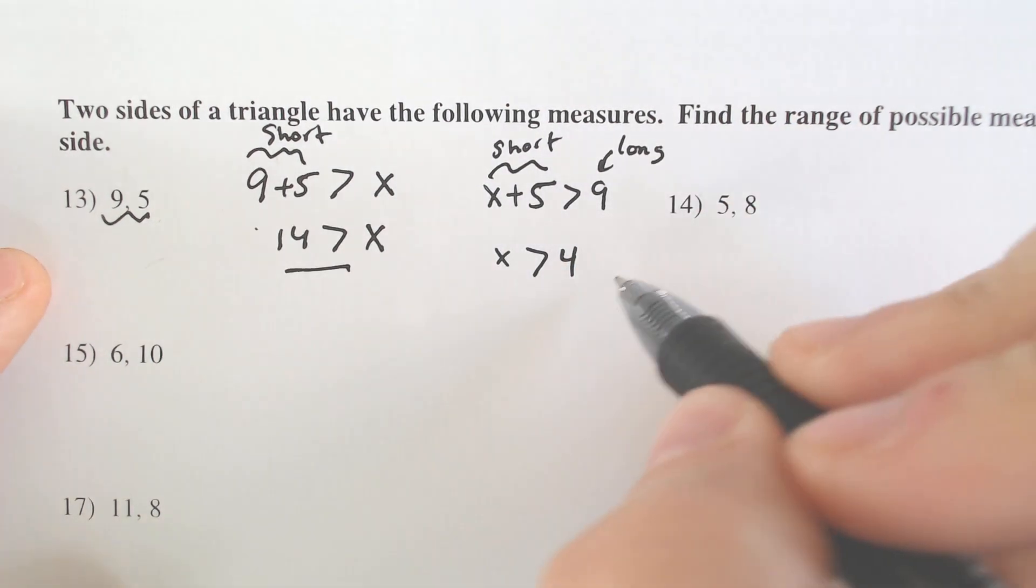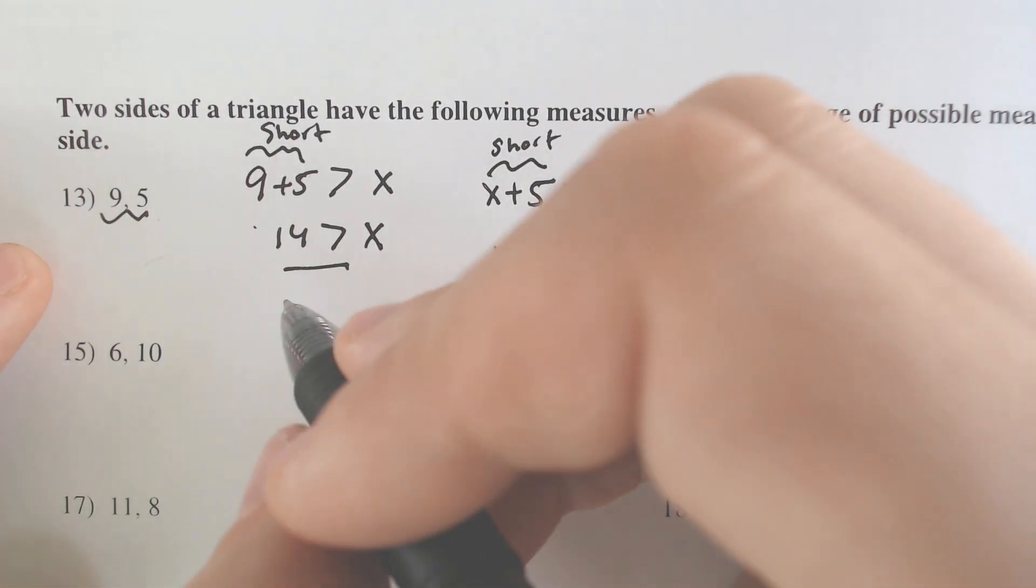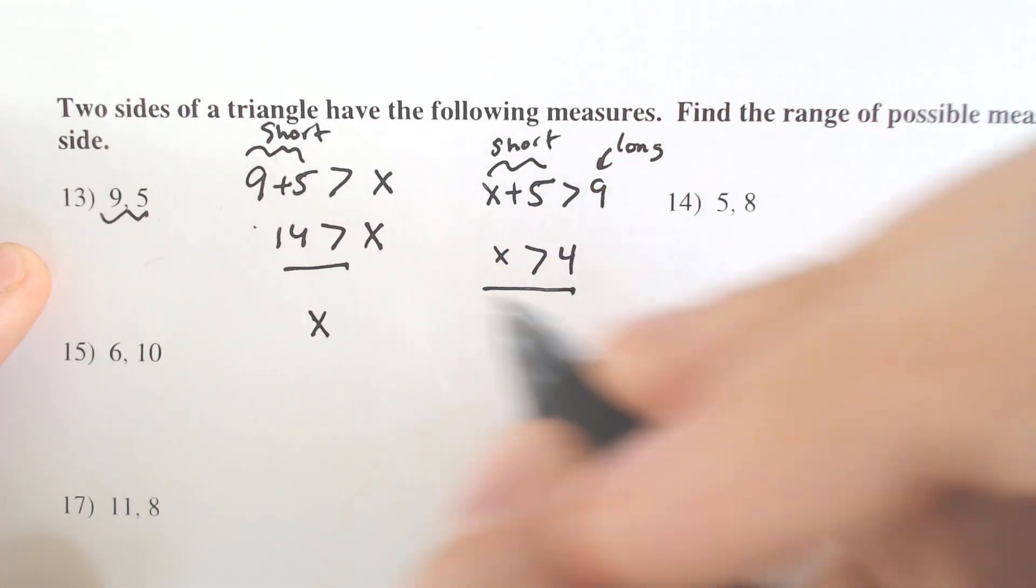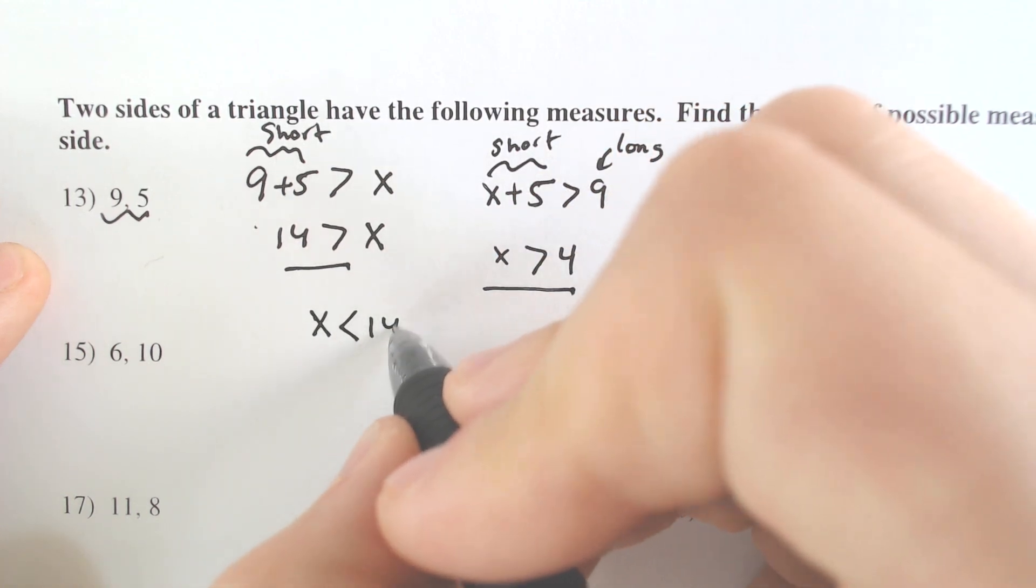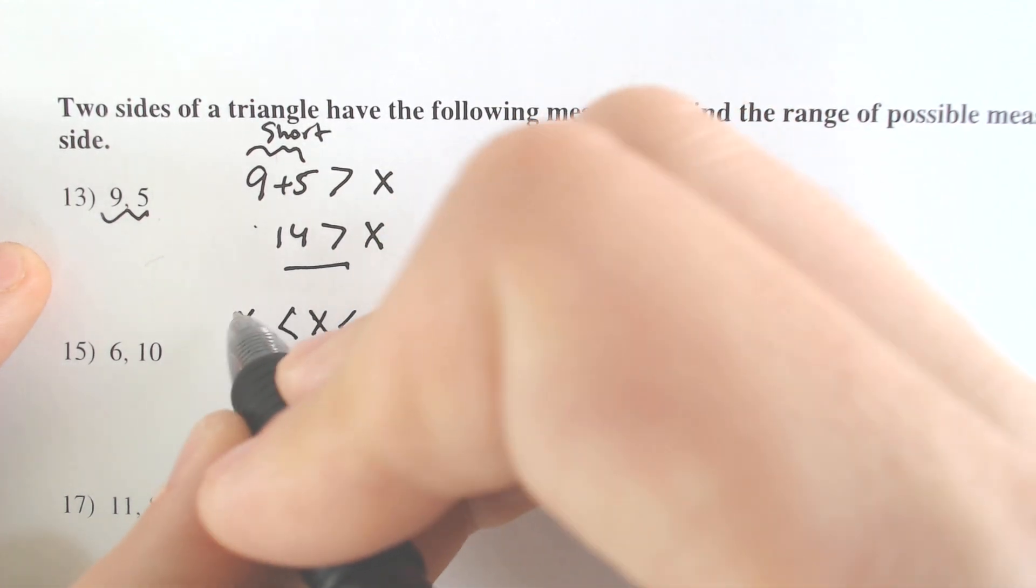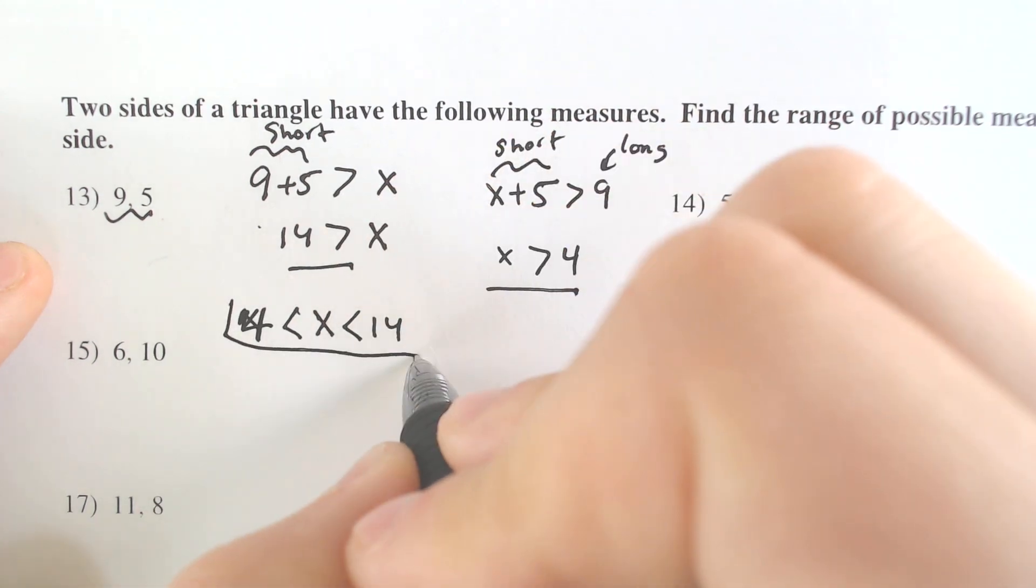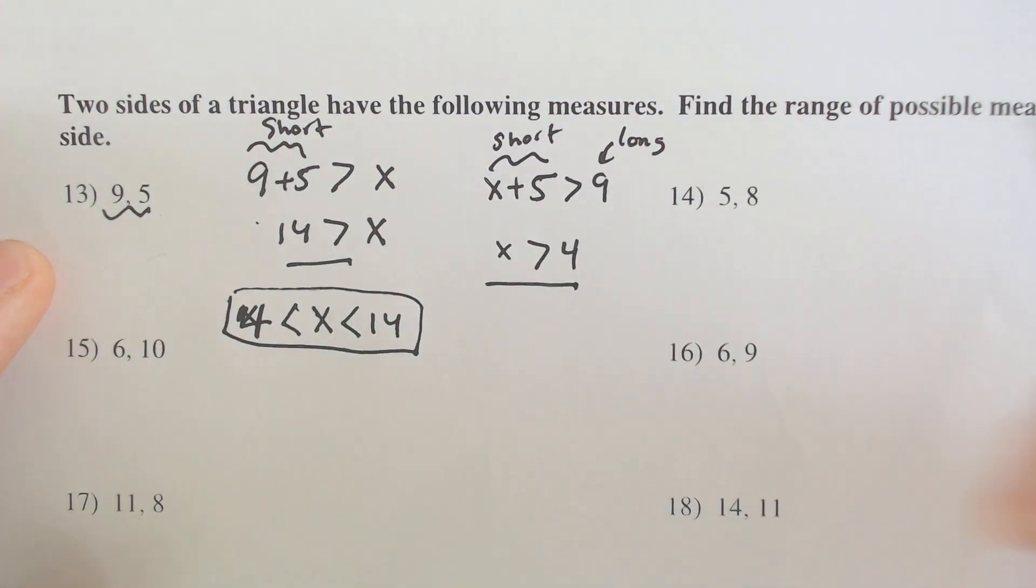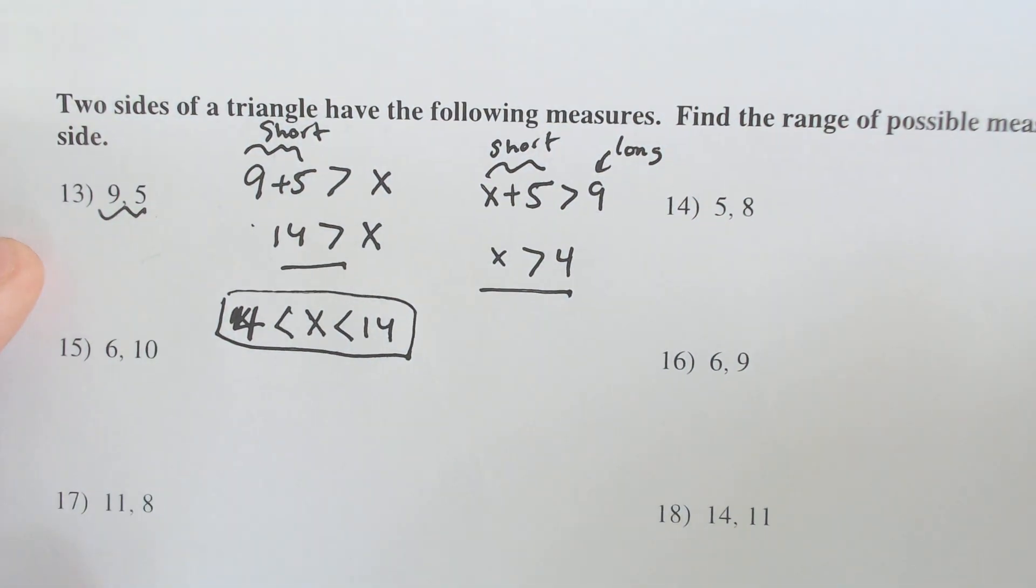So this is technically correct. X has to be greater than 4, but X has to be smaller than 14. And a lot of times you'll see it written like this, where X is spliced between the 14 and the 4. Where you physically put X in between the two.